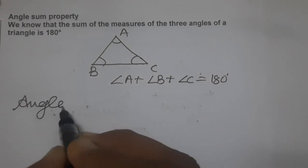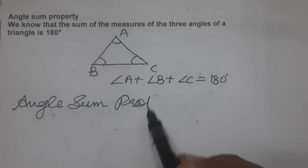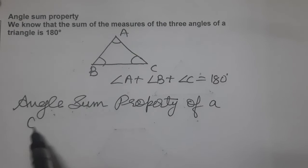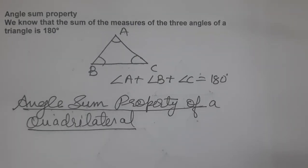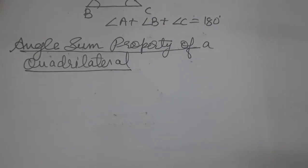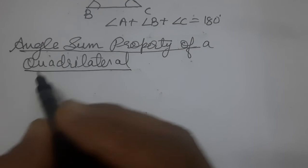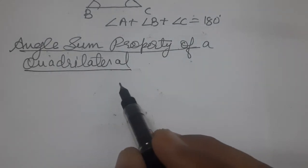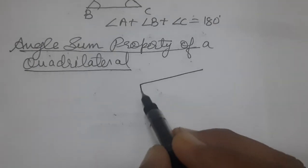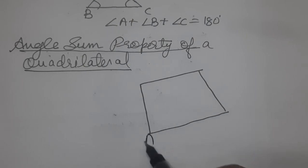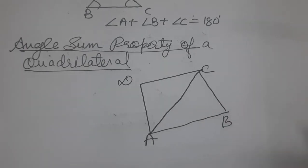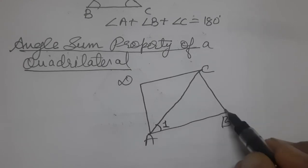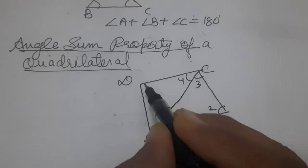Let us prove it. Draw any quadrilateral and name it ABCD. Join any one diagonal — you can join AC or BD. By joining diagonal AC, we get two triangles. Give the names: angles 1, 2, 3 in triangle ABC and angles 4, 5, 6 in triangle ADC.